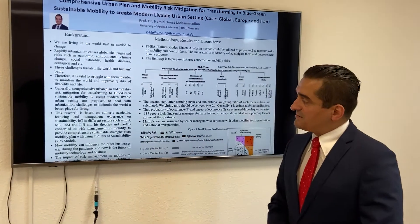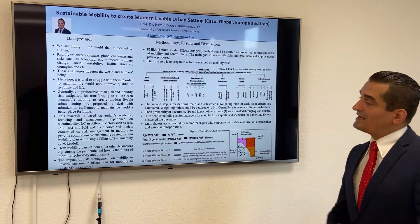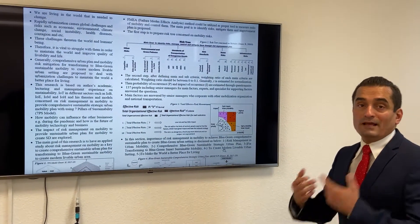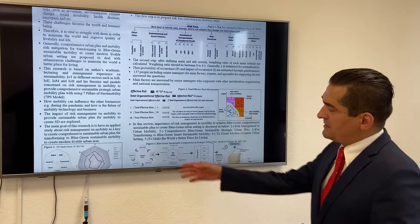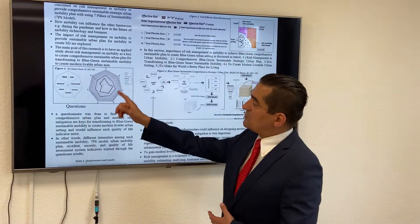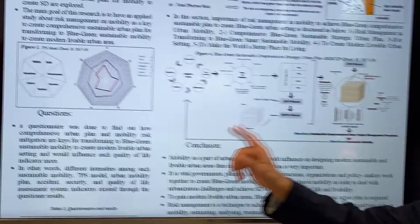I'm going to tell you about my 7PS model, the seven pillars of sustainability, and the survey I made. This is the model with seven pillars: politics, social, environment, economy, technique, culture, and education.